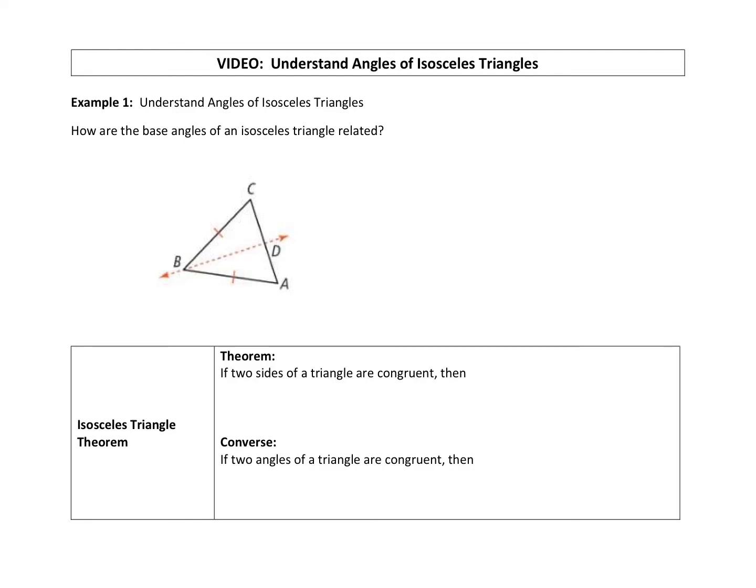All right. Our first example, we're going to work with an isosceles triangle. Just a reminder, isosceles triangles, we learned in an earlier unit, have two congruent sides.